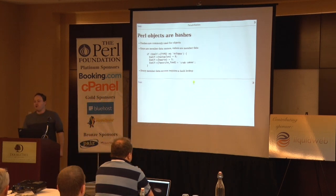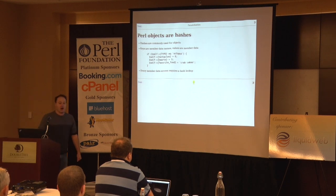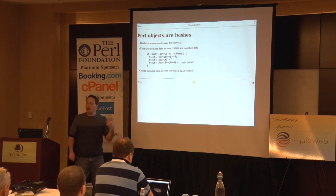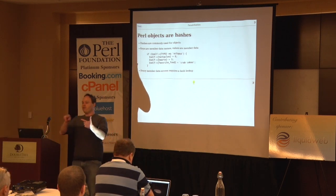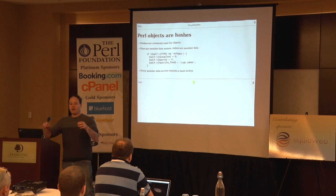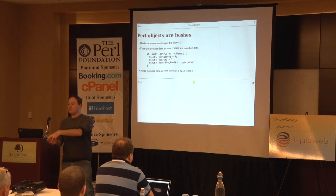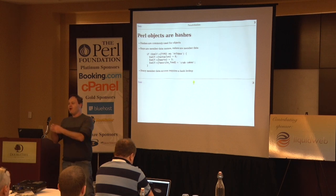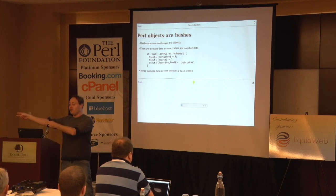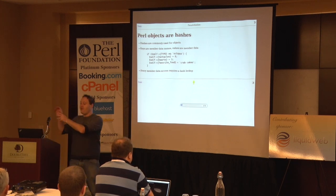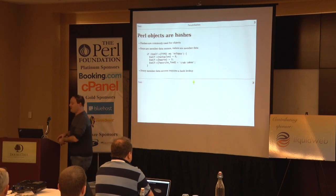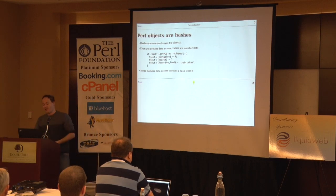Every time you read or write a piece of member data, you have to do a hash lookup. To do a hash lookup, you take the string, you crawl over its characters one at a time, and you do this computation. You figure out the hash value, then you look up the hash value in the hash table, find the corresponding thing, and maybe you have to search a linked list to find the actual value associated in the hash table.